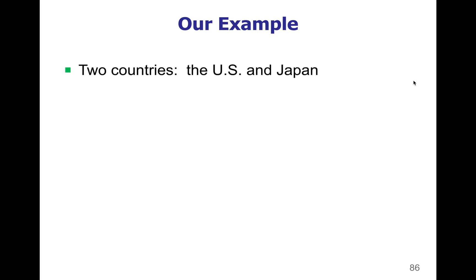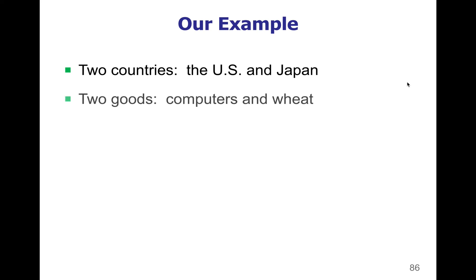Now, if we go back to our PPF example, we were looking at the United States and their production of wheat and computers. Now we're going to add a different country to this. We're going to look at the country of Japan and see if they can be a suitable trade partner for our wheat and computers example. We'll compare how much wheat and how many computers Japan can make, and then compare the PPFs to see if these two countries can benefit from a trade relationship.